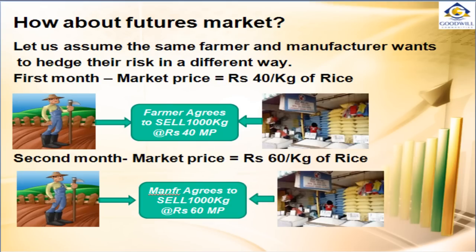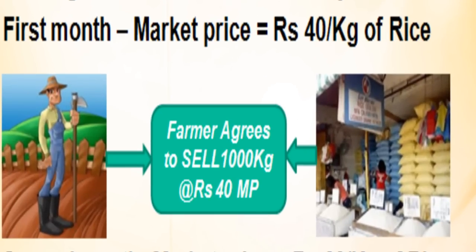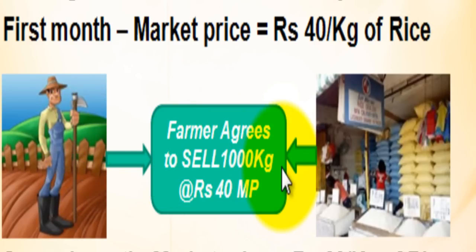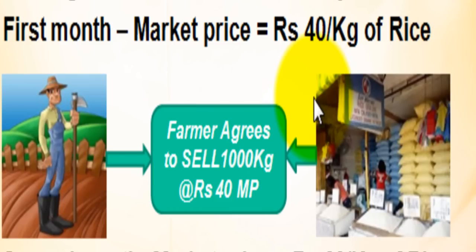Let us assume the same example of farmers and manufacturers. In this particular case, both the farmer and the manufacturer want to hedge their risk in a different way. In the first month, the market price is Rs 40 per kg of rice. Both the farmer and the manufacturer enter into a contract where the farmer agrees to sell 1000 kg of rice at Rs 40, and the manufacturer agrees to buy 1000 kg of rice at Rs 40.